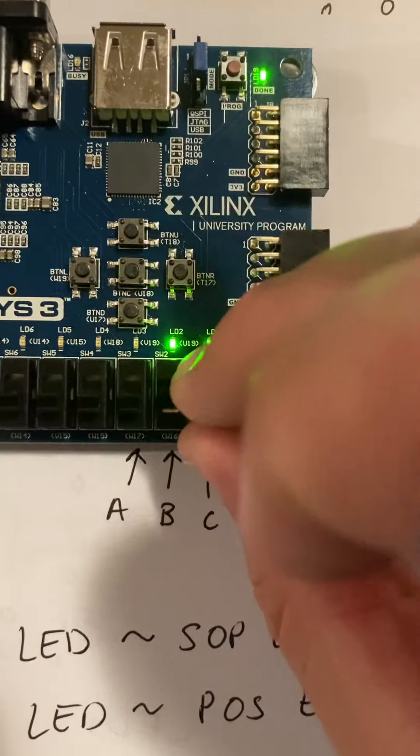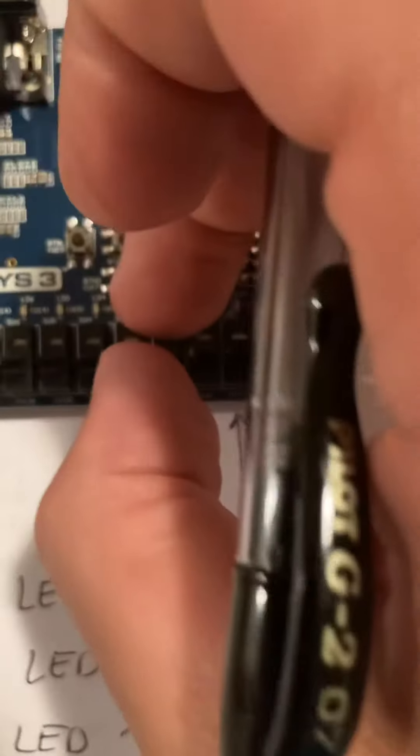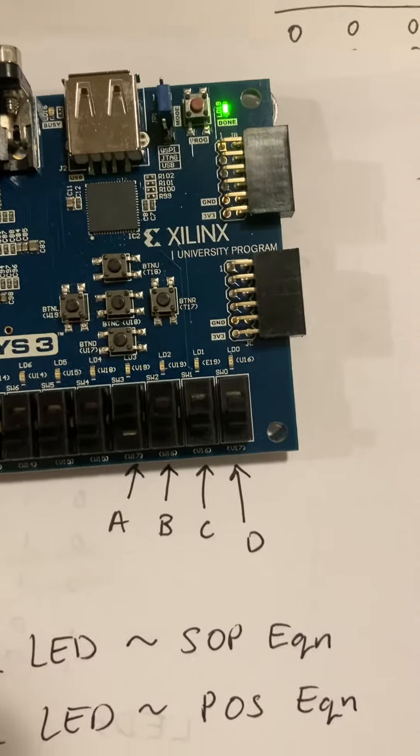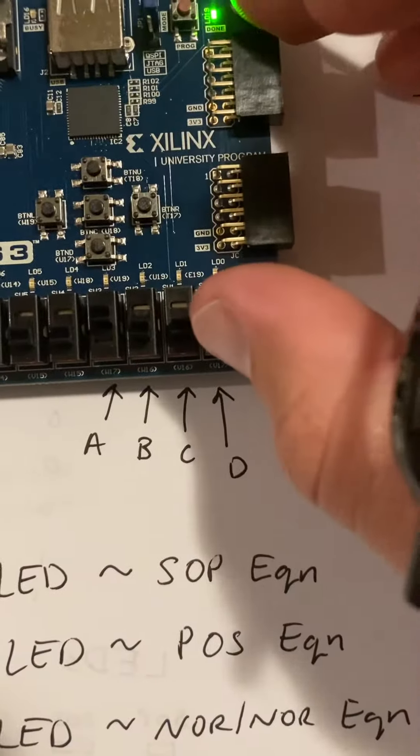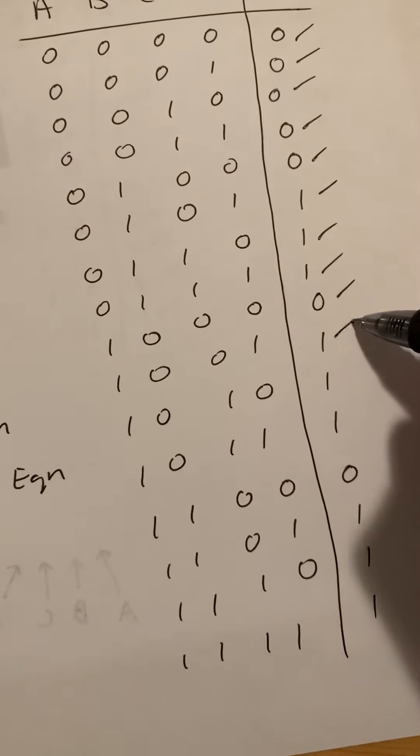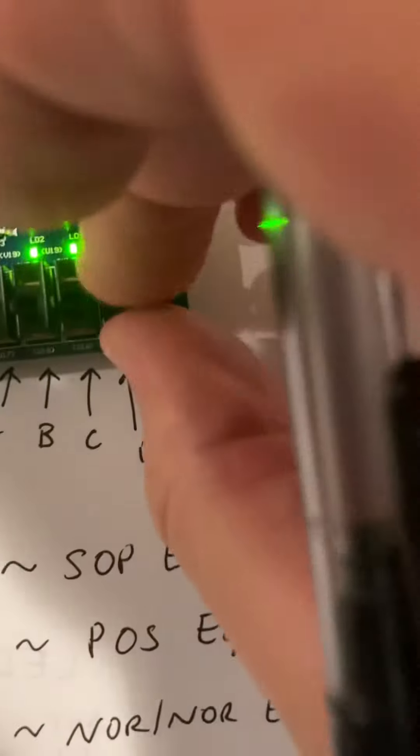I'm going to do all these switches off again. I'm going to do just A, and then my LEDs are on. A and D, LEDs on. A, C, and D, LEDs on.